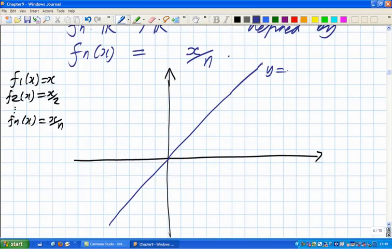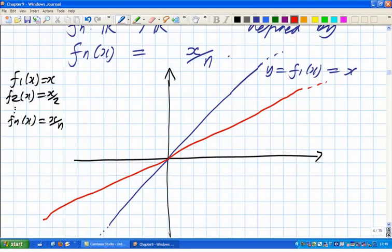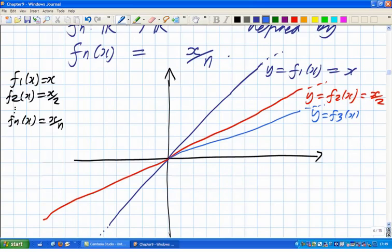So, here's the first function. That's y equals f1 of x equals x, which we sketched in blue. And now in red, we'll do y equals f2 of x, which is x over 2. And we'll do x over 3, which is f3 of x.